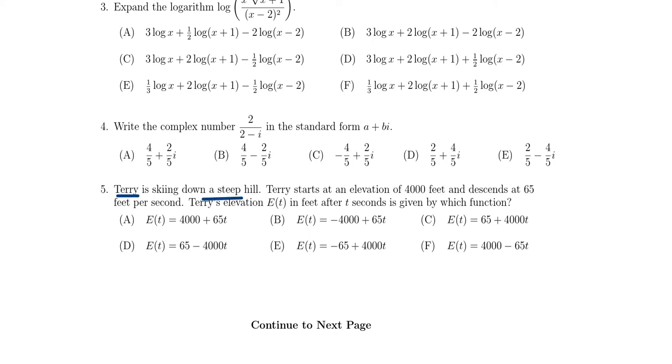Terry is skiing down a steep hill. Terry starts at an elevation of 4,000 feet and descends at 65 feet per second. If the elevation of Terry is E(T) after T seconds, what's this function going to be?